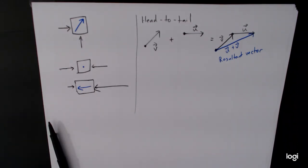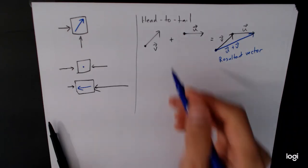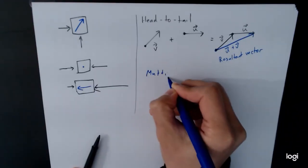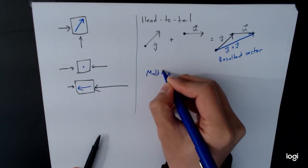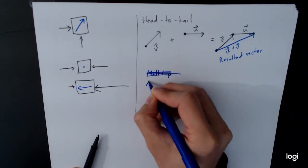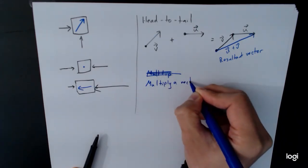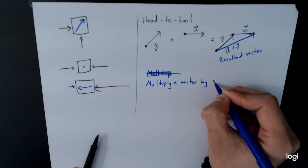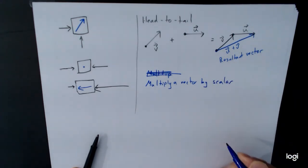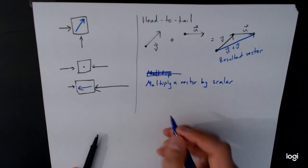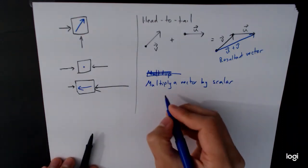We can also multiply a vector by a scalar. Now what's a scalar? A scalar is just a number. And in fact, the word scalar here should remind you of scale, like to scale something, stretch something out to make it bigger or smaller.